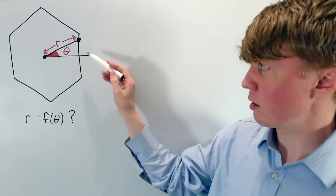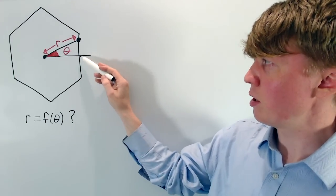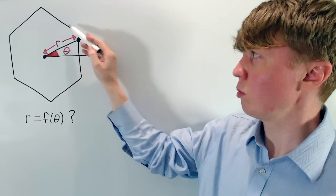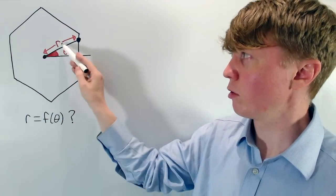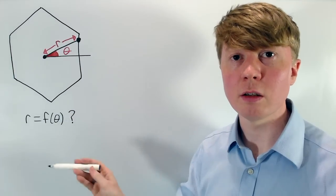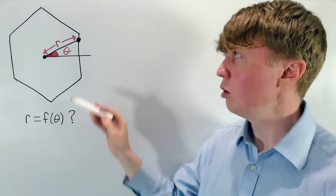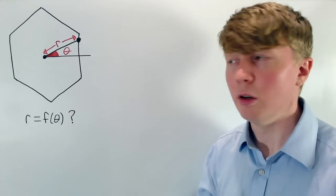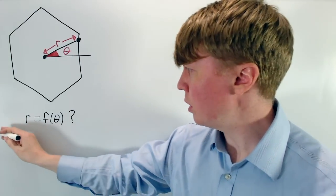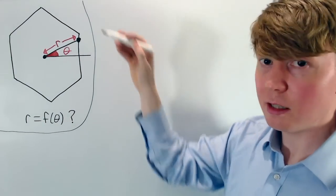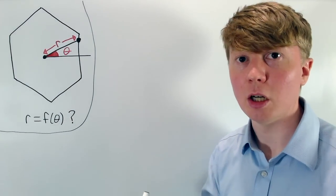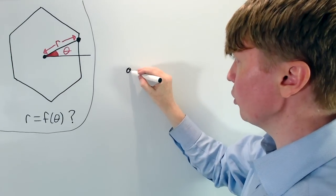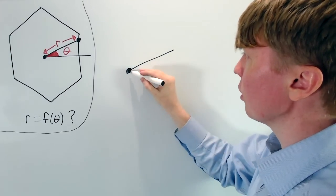Here we've drawn a hexagon, set up so that when theta is zero we should get the correct r value, and as theta goes round, r as our function of theta should give us all the different points on this hexagon. If we're going to solve this more generally, we'll actually do this for an n-sided polygon, so I'll start by drawing a general picture for an n-sided polygon.